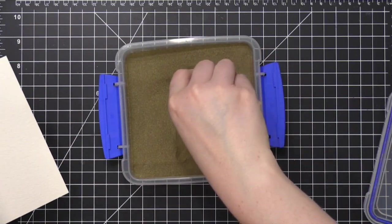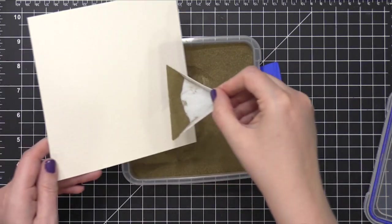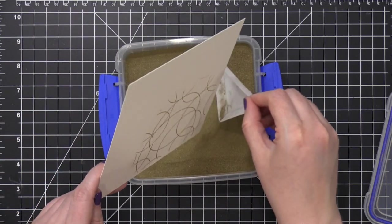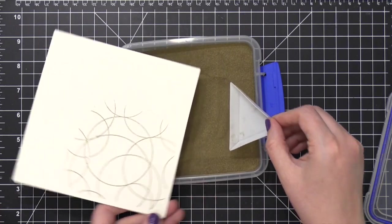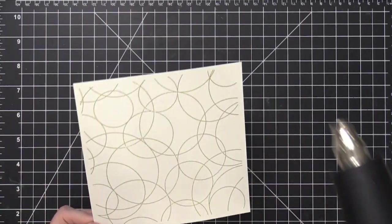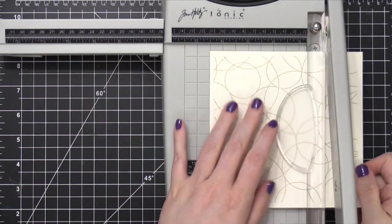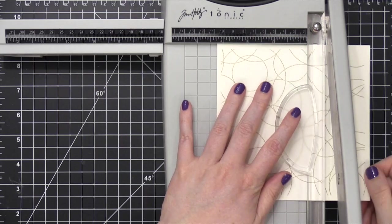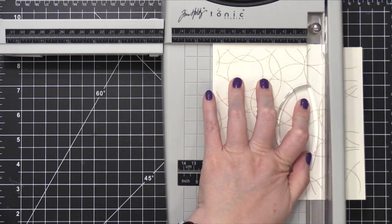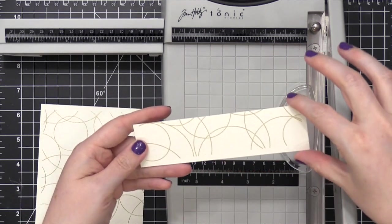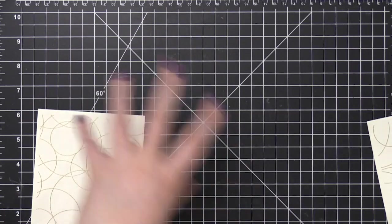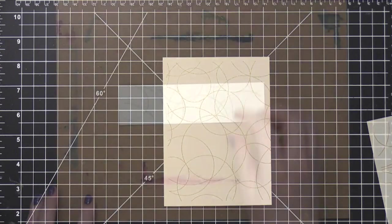I'm changing the embossing powder color to Brutus Monroe Gilded, which is a gold powder at the last minute, just because it'll be a little bit easier to see on screen. And also for me to see the gold lines as opposed to the white.